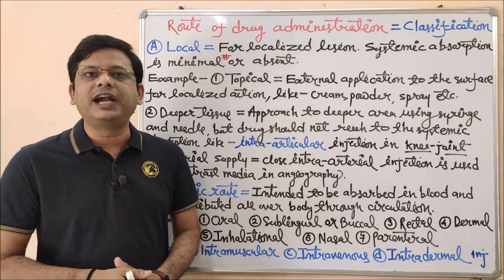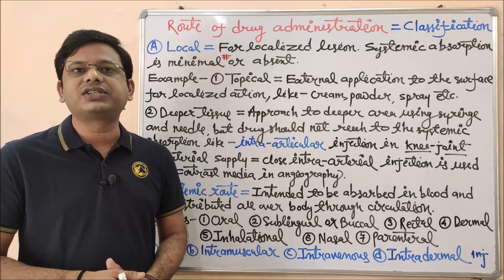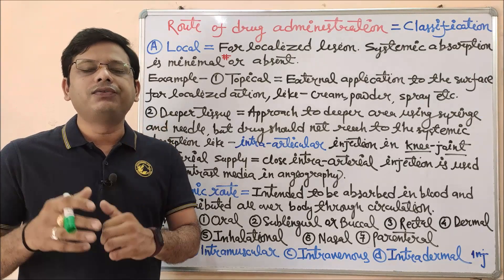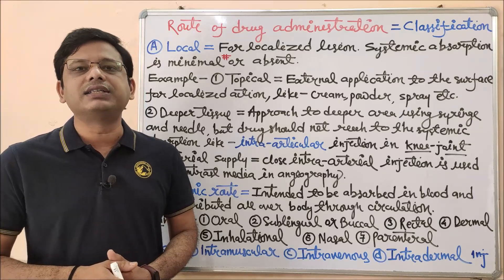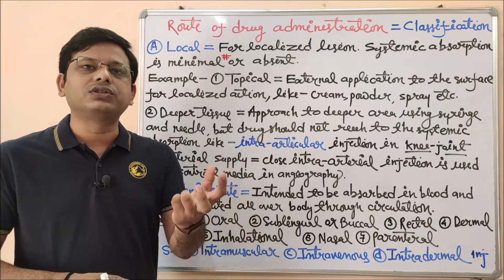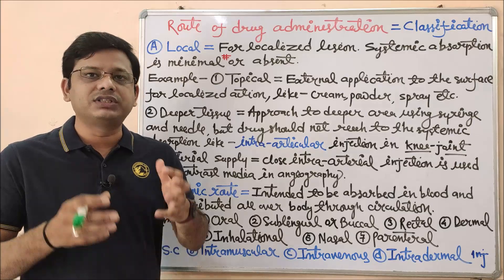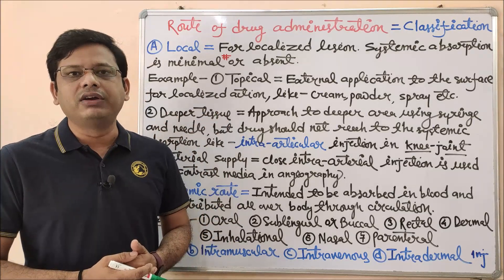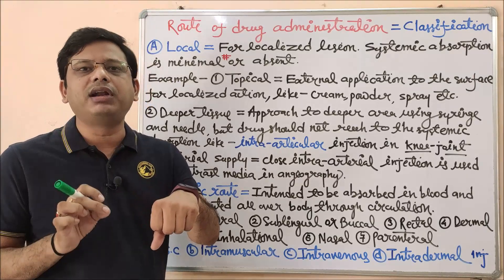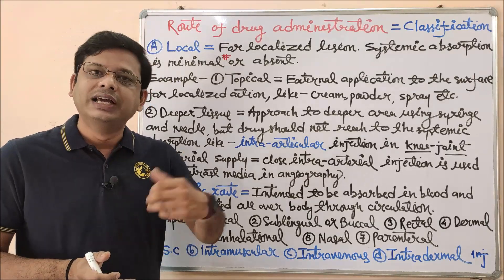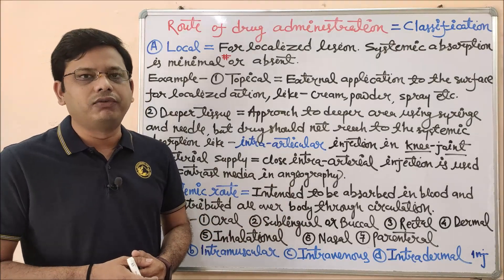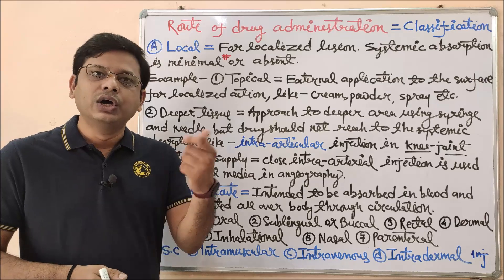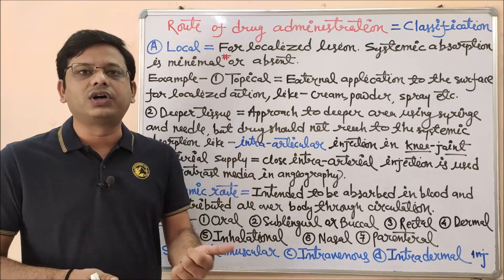Let me start the different classifications of routes of drug administration. Whatever effect we are expecting from the drug can be classified into its route. If we need systemic effect, that means the effect should go throughout the body — that is called systemic effect. But if I am expecting the desirable effect only in a restricted part of my body, I simply consider that a local effect. So first of all we should understand the meaning of these two words: local and general, or local and systemic.